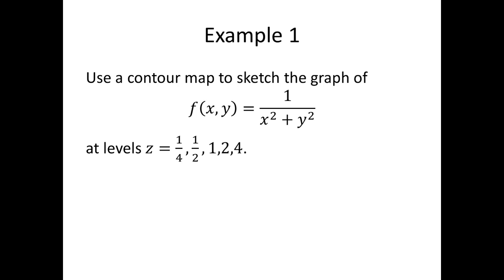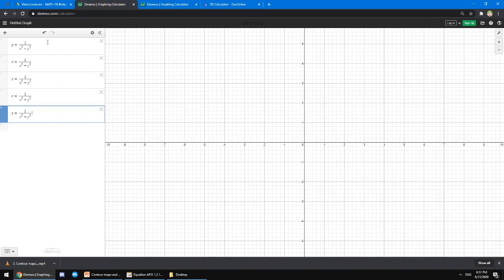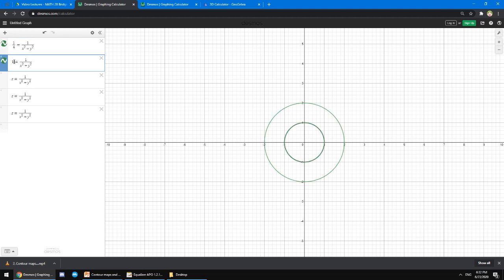We're going to use this graphing website called Desmos, which I highly recommend. But you can also use GeoGebra. We'll use GeoGebra for another example later on. All we have to do is plug in the function z equals 1 over (x² + y²), as you can see here. And we just replace the values of z by the given values 1/4, 1/2, 1, 2, and 4.